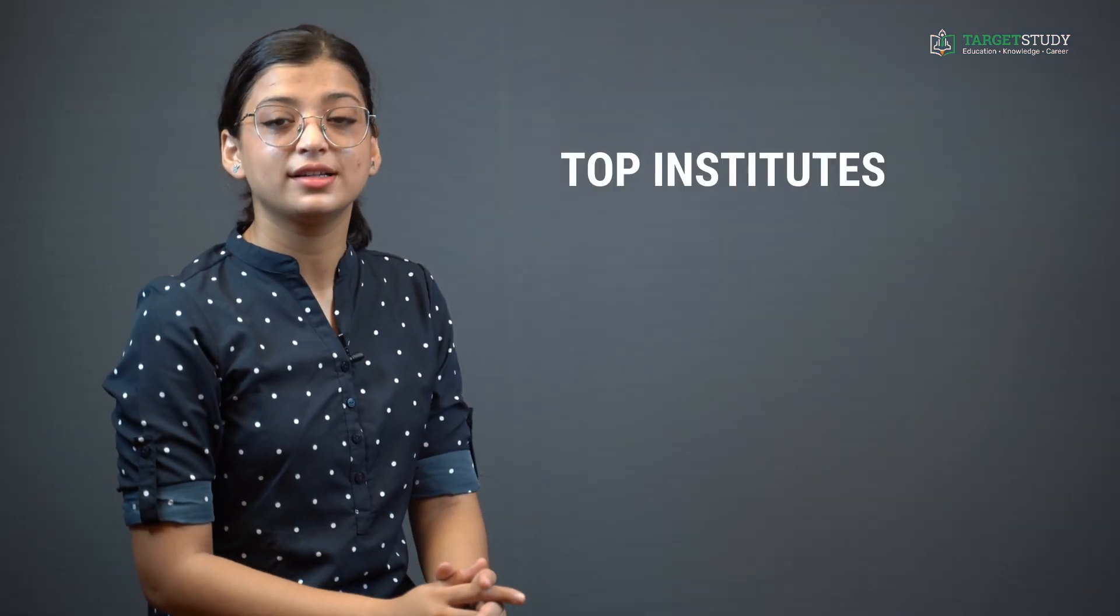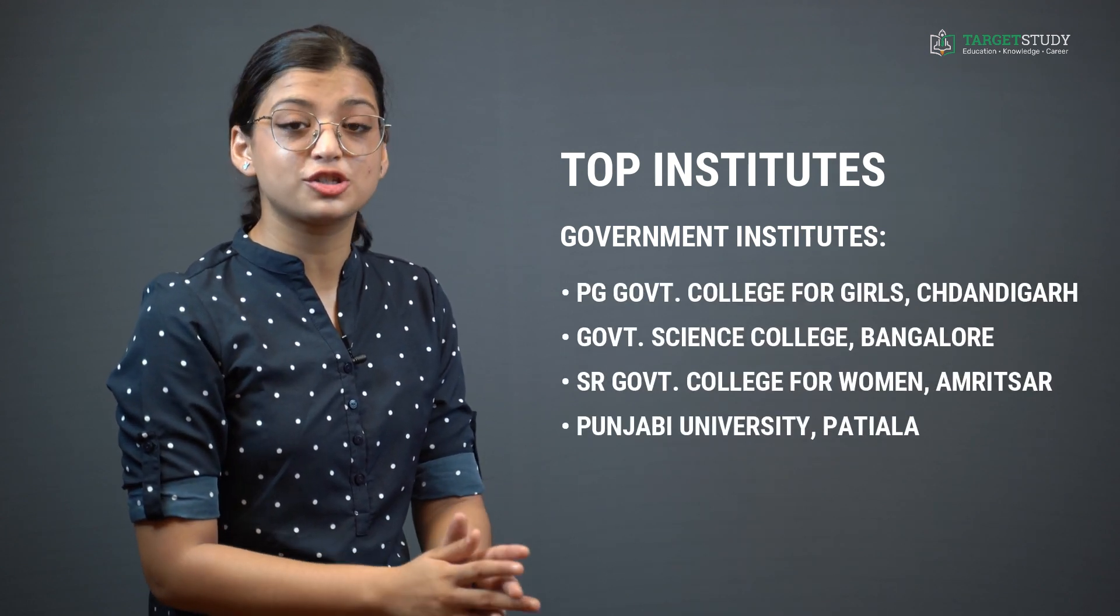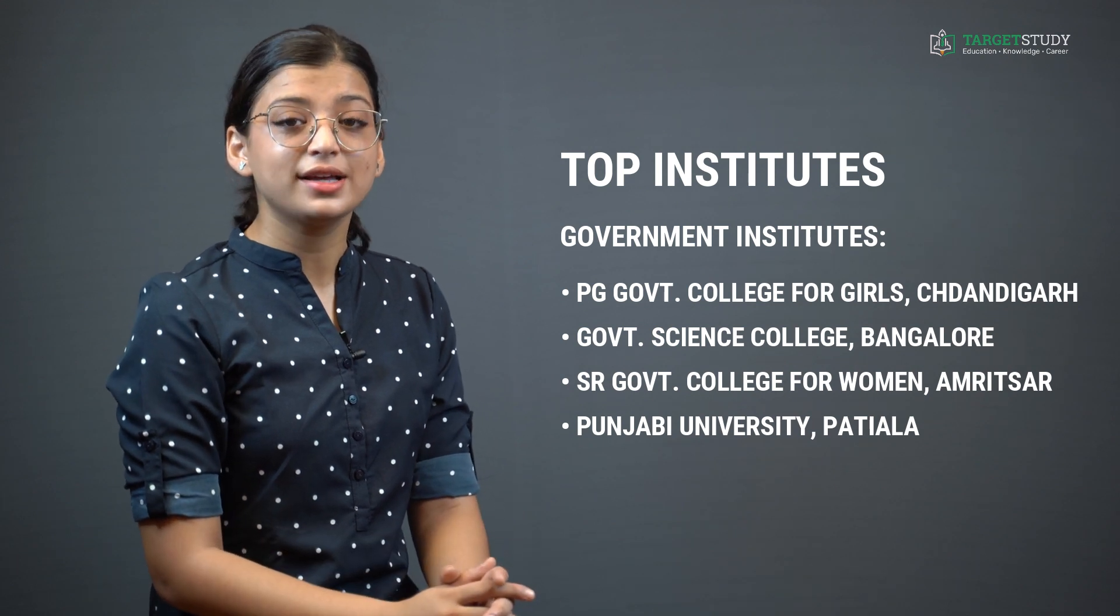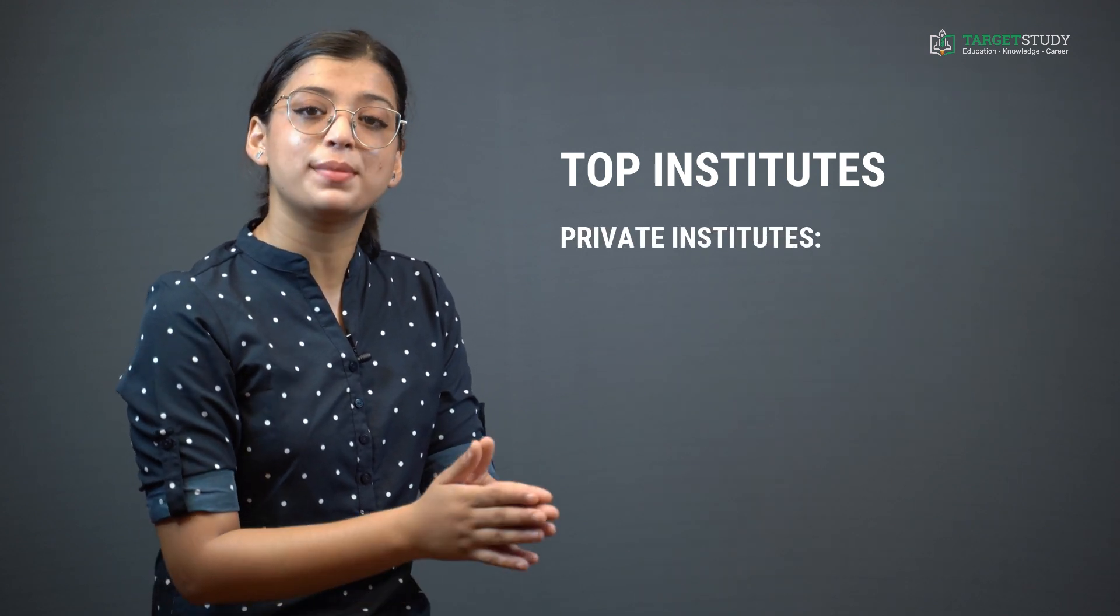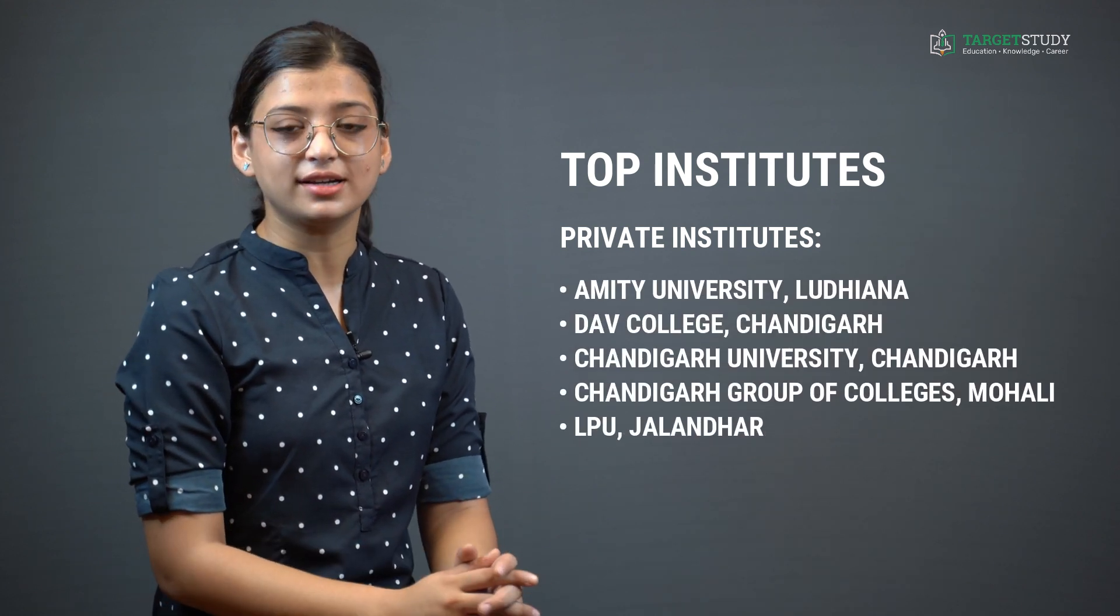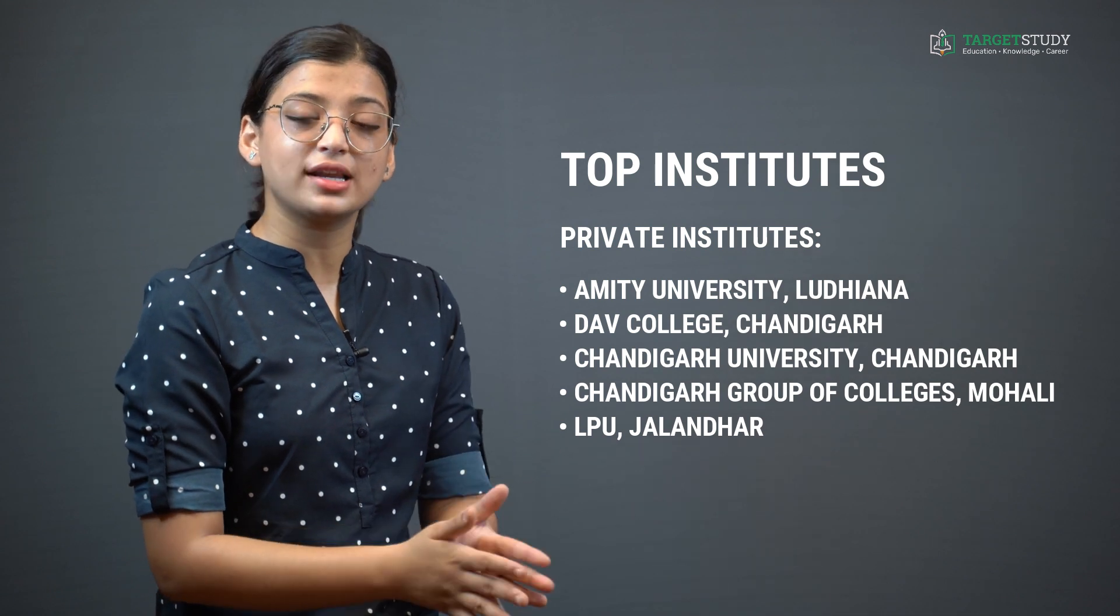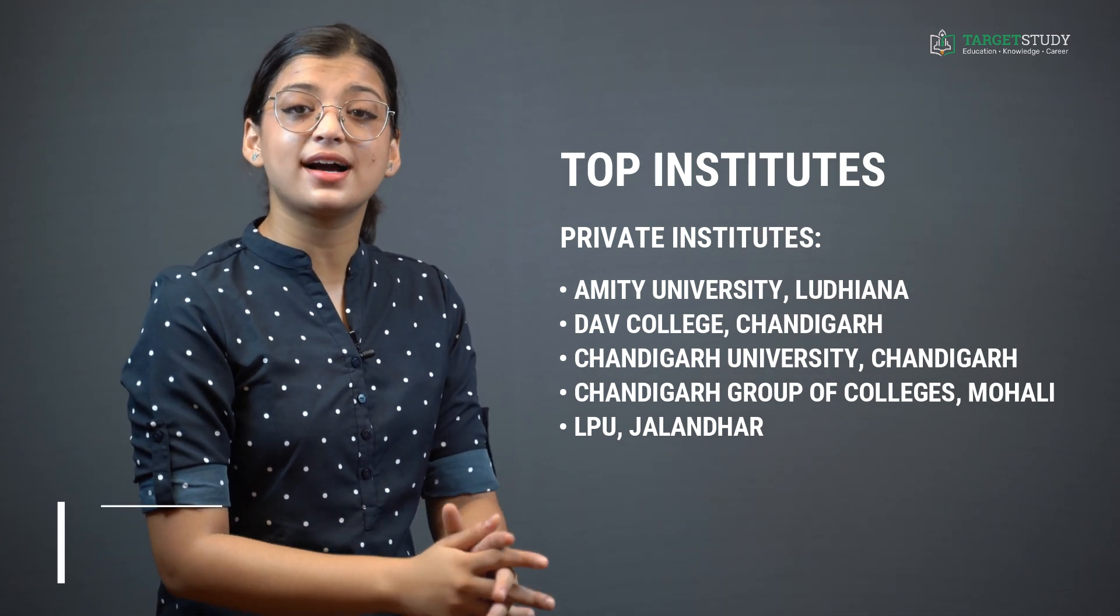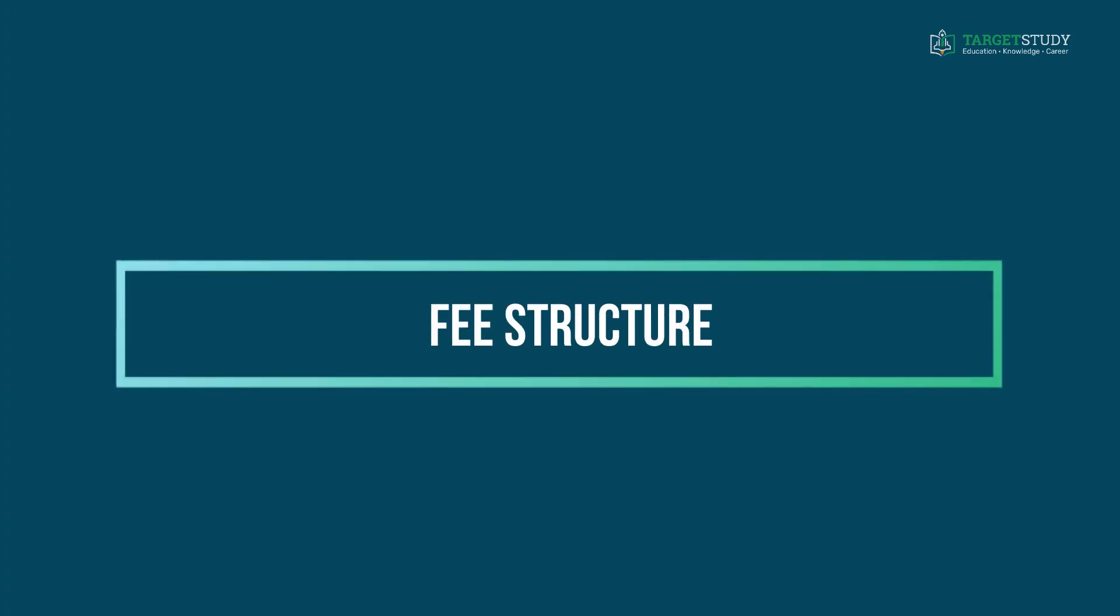Now let me tell you about some of the top B.Sc Computer Science Institutes of India. If you are looking for some of the best Government Institutes, then you can go for Postgraduate Government College for Girls Chandigarh, Government Science College Bangalore, SR Government College for Women Amritsar, and Punjabi University Patiala. And if you want to join some of the best Private Institutes, then you can go for Amity University, DAV College Chandigarh, Chandigarh University, Chandigarh Group of Colleges Mohali, and Lovely Professional University Jalandhar. You can visit our website targetstudy.com to have a complete list of all the Government and Private B.Sc Computer Science Colleges in India.